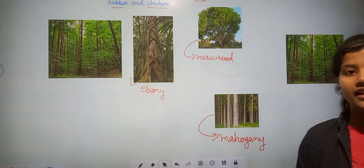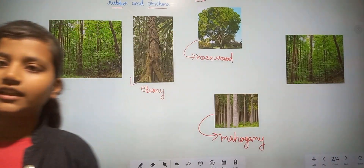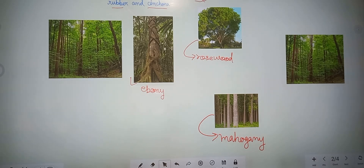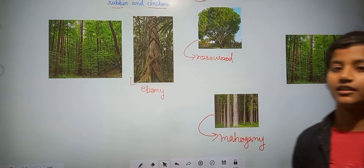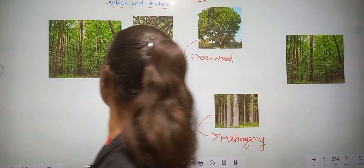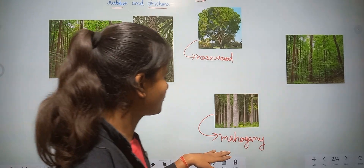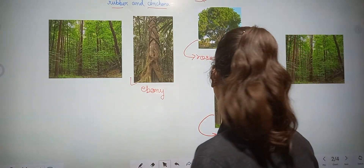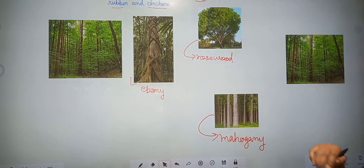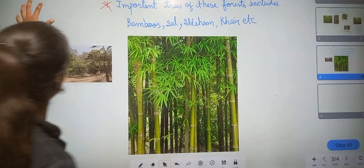So in this evergreen forest — a forest which receives 200 centimeters of rainfall, that's why it remains evergreen throughout the year. Here are some important examples of this evergreen forest: rosewood, ebony, mahogany, rubber, and cinchona. So our next forest is — write the features of the deciduous forest.